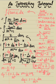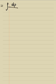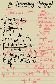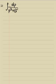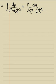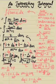Substituting these values in, the integrals become: ∫ dp over (p² + 2) plus ∫ dq over (q² − 2). I'll write 2 as (√2)² to make it easier to apply the standard formulas.